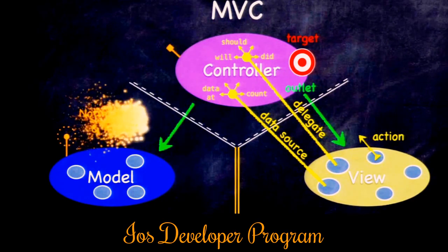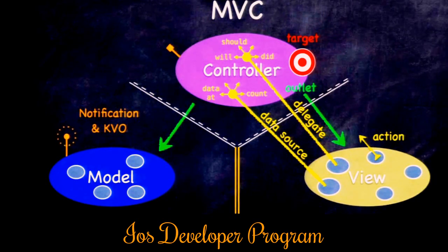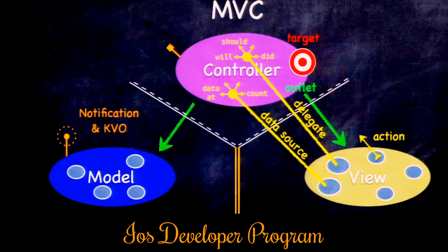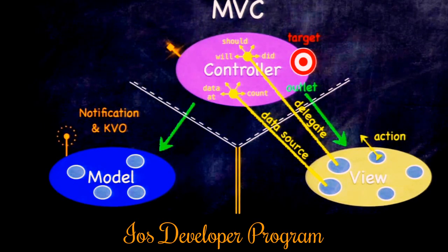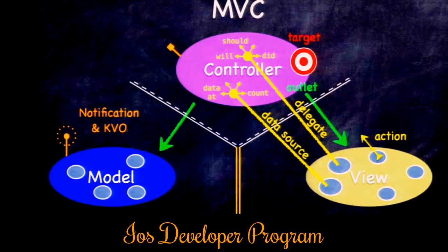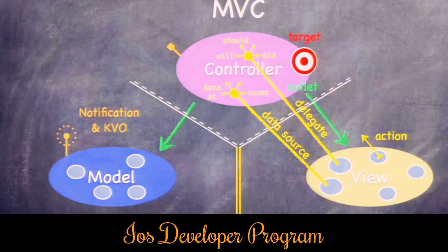We handle that using a radio station model. The model will broadcast information to anyone who's interested. The mechanisms for doing this in iOS are called notification and key-value observing, or KVO. The model says 'any time something changes, I'll broadcast on my radio station,' and the controller tunes in. When it finds out something changed, it communicates via its green arrow to the model to get that changed data.